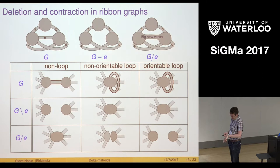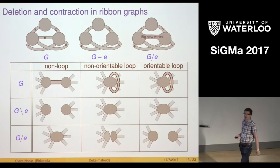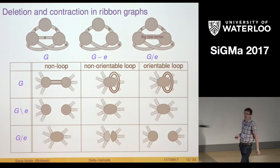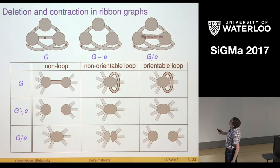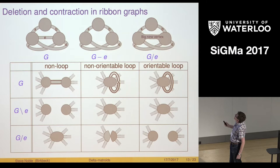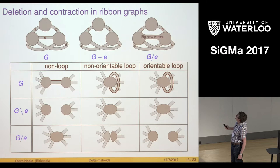What about deletion and contraction in ribbon graphs? Deletion works exactly as it does in a graph, just delete. Contraction: you preserve the boundary walks. Let me give you one quick example. If I were to contract this orientable loop, the boundary walk starting at the top left would come around, come down here around the loop and go down the bottom left. Something similar on the other side. The only way that can happen is if I actually split this vertex into two. And so that is the contraction.